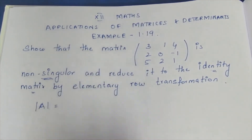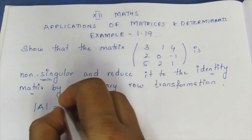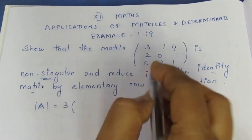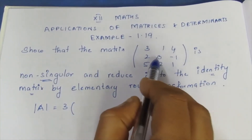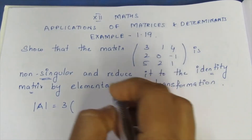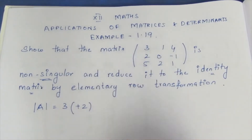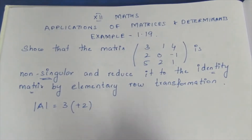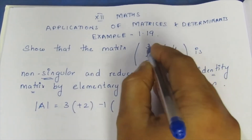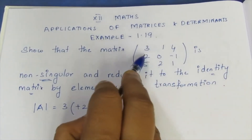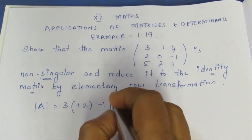The determinant calculation: 3 into row-column cross multiply gives 0 plus 2 terms. Minus into minus gives plus 2 terms. The sign for the next item is minus 1. It is a row and column multiply: 2 plus 5.